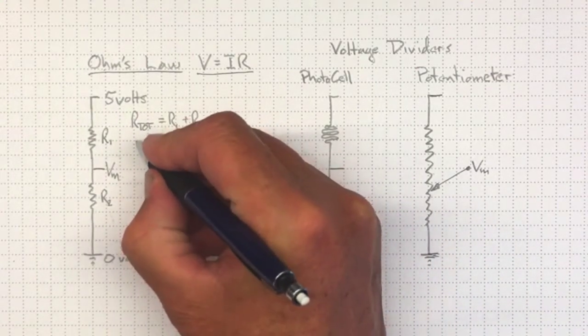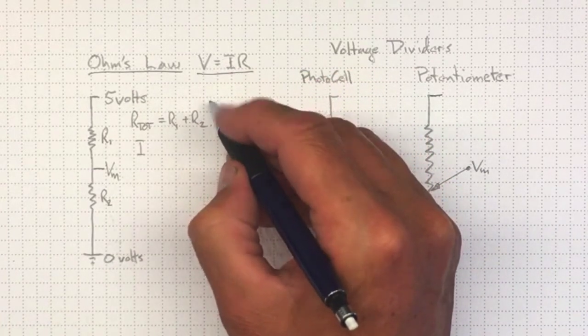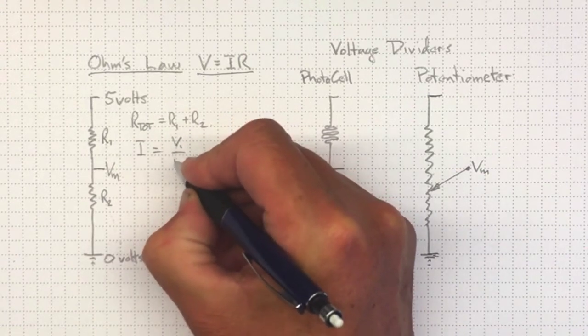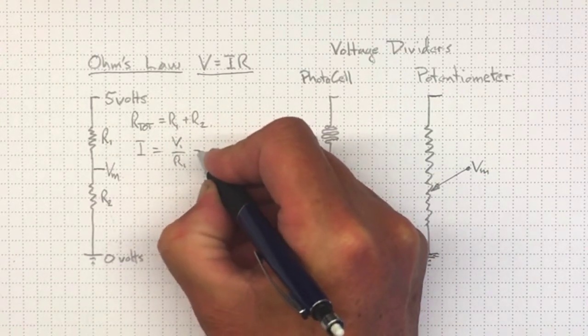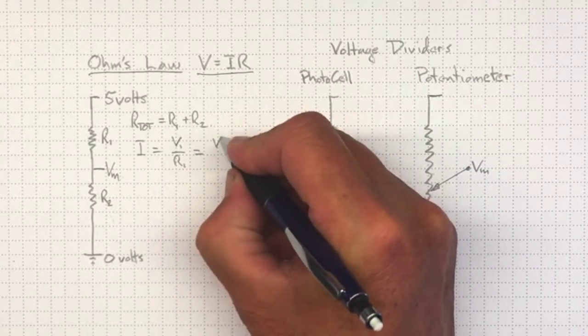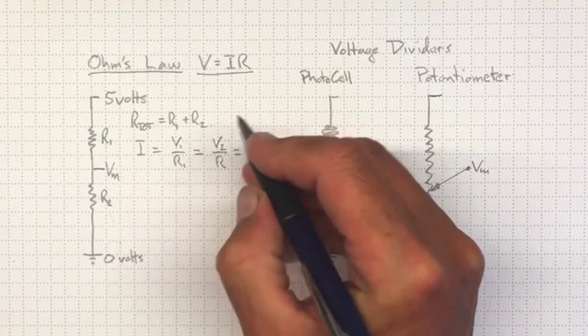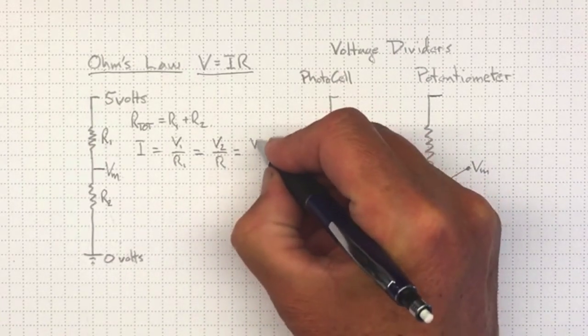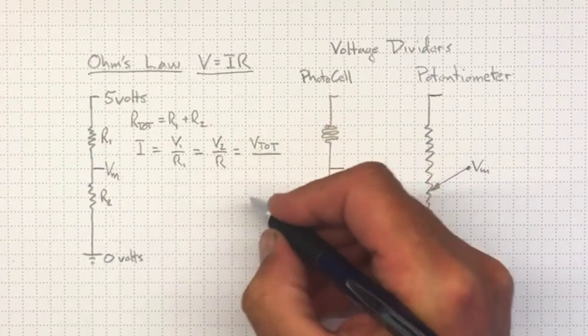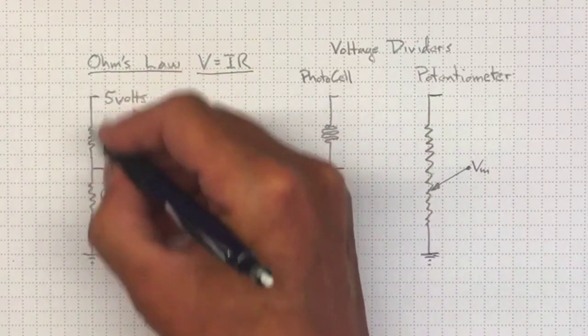So the current I equal to V over R will be equal to V1 over R1, and that'll be equal in the same way to V2 over R2, and to the total voltage V total over the total resistance from here to here.